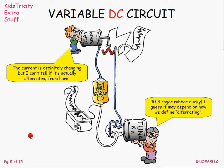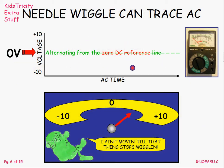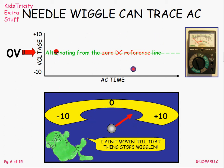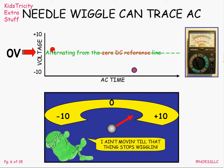I wanted to show the kids a true alternation of current — current going one way, then the other way, back and forth. When I plot an alternating current, I can do it from a zero reference point. I go up to 10 volts positive and then swing down to 10 volts negative on the voltage, which causes the current to go in one direction and then alternate back and go the other direction — back and forth, up and down. The current reverses direction.